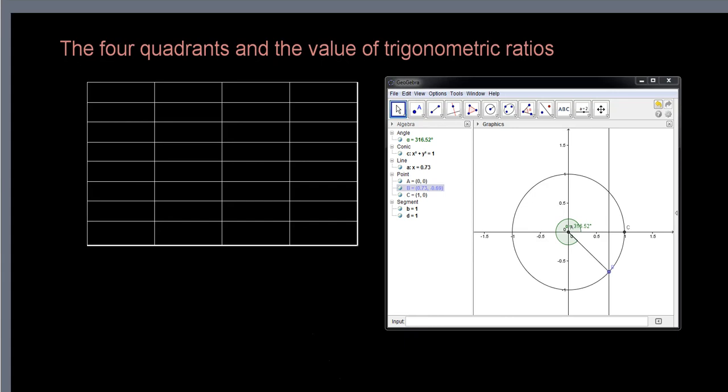By now you should be pretty familiar with the concept of unit circles and the fact that the point on the unit circle tells us the coordinates of that point, which gives us the sine and cosine theta of that point.